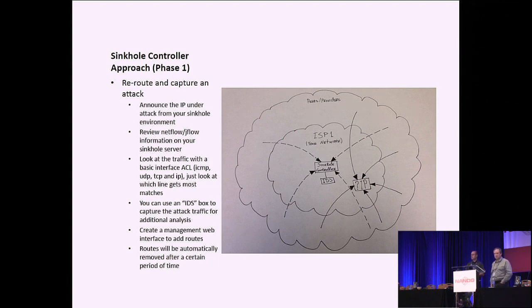There is a way to reroute the traffic to your sinkhole controller for an environment for additional analysis. You're basically looking at NetFlow S4 information. You can set up an interface ACL, just to see if you're getting any hits on ICMP, UDP, or TCP. So basically, you turn the whole network into this IDS type thing that shoves traffic down.